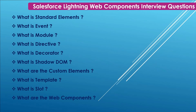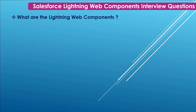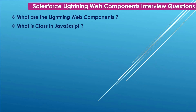Next: What are web components? Web components hold a collection of web platform APIs and allow creating custom functionality that can be used in web pages. Next: What are Lightning Web Components? Lightning Web Components use core web component standards. LWC uses custom HTML elements built using HTML and modern JavaScript.